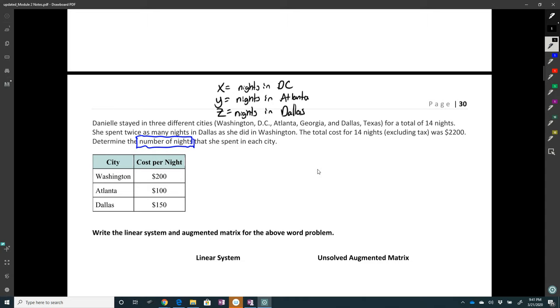All right, so we know that there is an equation for the total number of nights. And that one's easy. It's just my variables. My variables have to add up to 14.